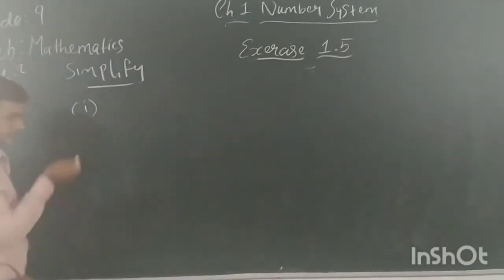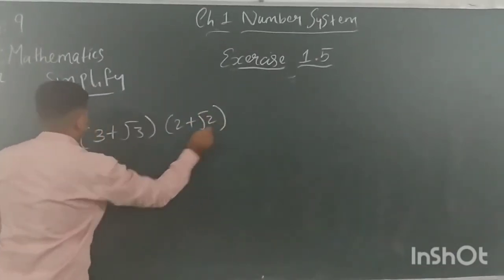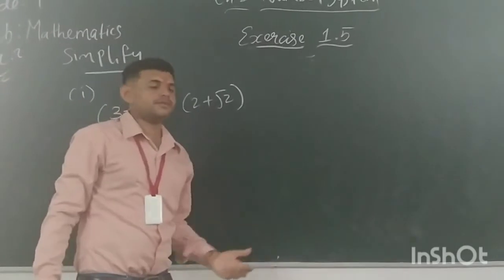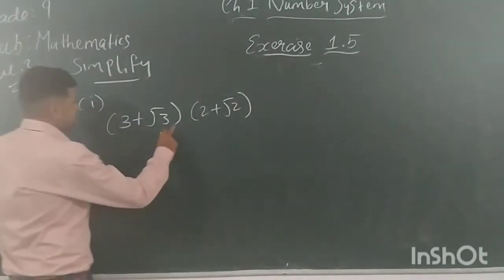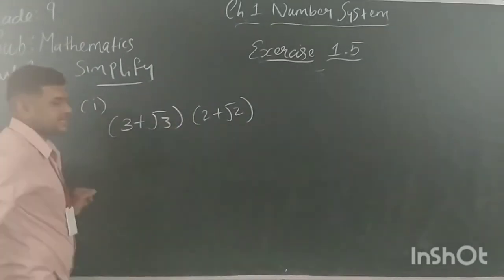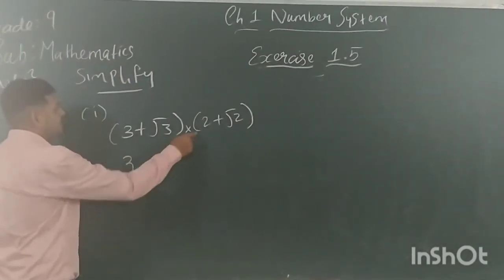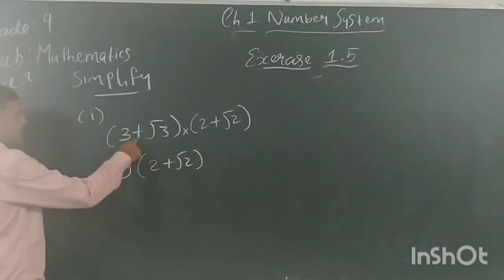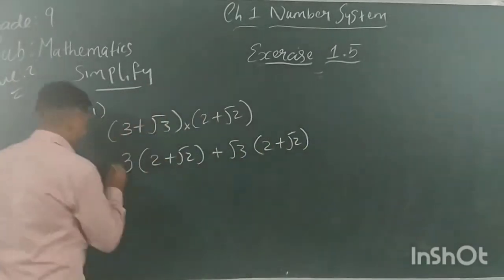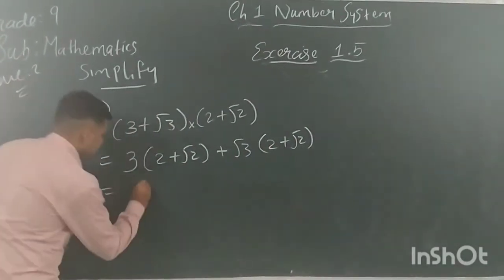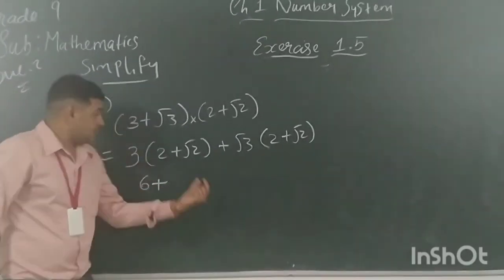First question, 2(a): (3 + root 3)(2 + root 2). As I explained in my previous video, when there are no signs between two brackets, just consider it as multiplication. Take 3 and multiply with the bracket (2 + root 2), then take root 3 and multiply with (2 + root 2). This gives: 3 times 2 = 6, plus 3 root 2.